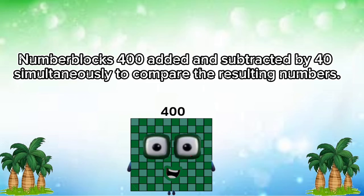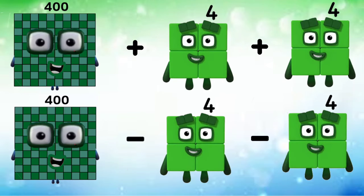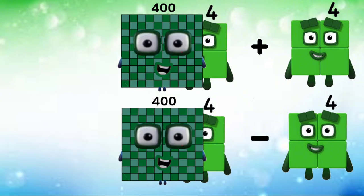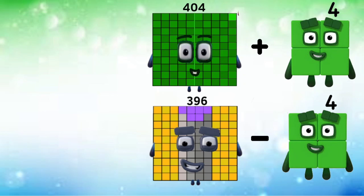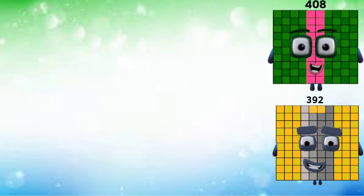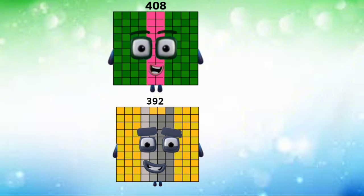Number blocks: 400 added and subtracted by 4 simultaneously to compare the resulting numbers. 400 plus 4 equals 404, and 400 minus 4 equals 396. Then 404 plus 4 equals 408, and 396 minus 4 equals 392.